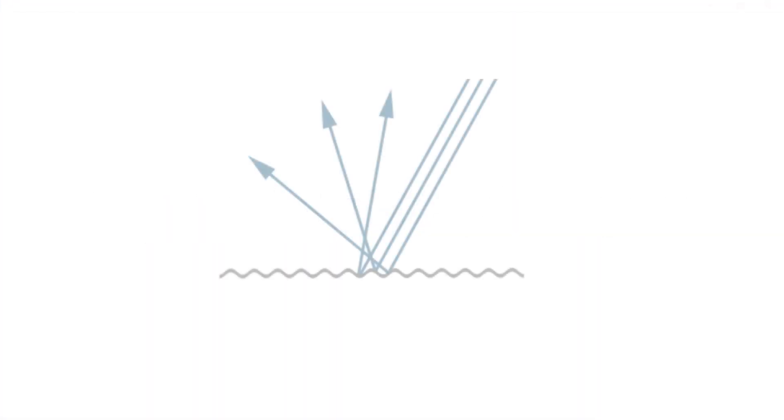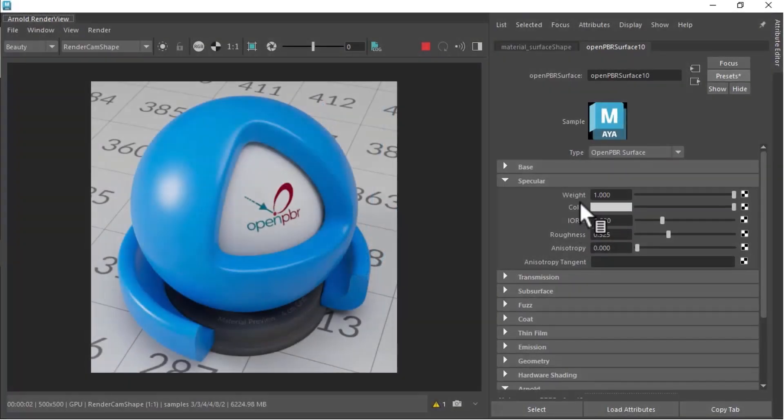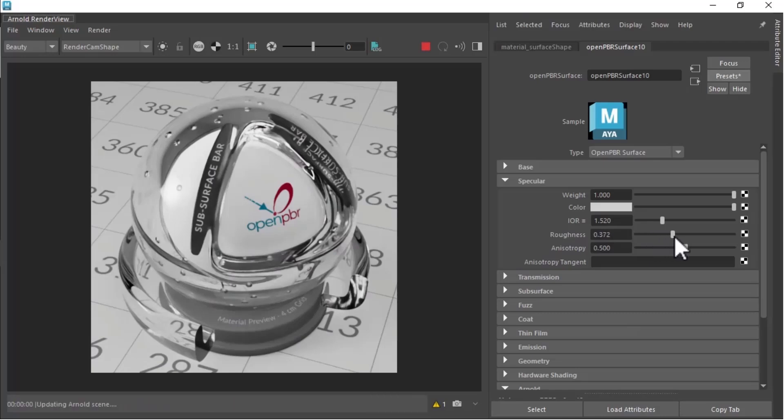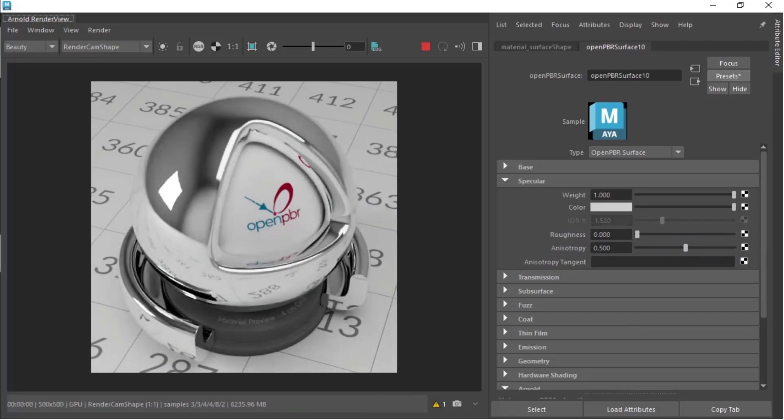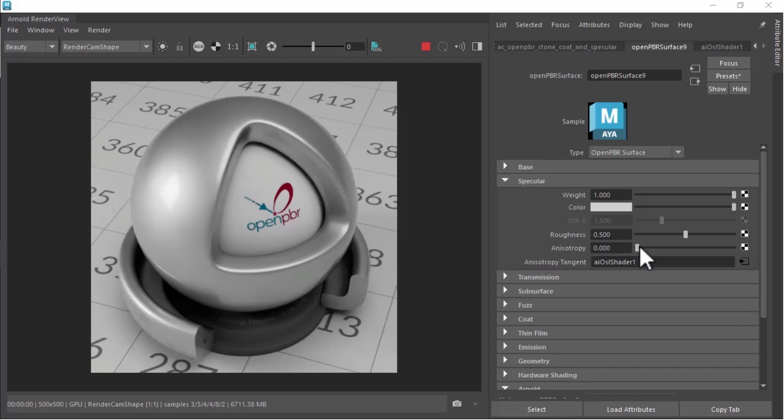In both the metal and dielectric cases, the surface appearance is strongly affected by the roughness properties. This controls the bumpiness of the surface, which makes light scatter in different directions and gives a rougher appearance. The main control for this is specular roughness, which affects the entire base. At 0, this produces a completely smooth, shiny appearance with sharp highlights. When dialed to 1, the highlights are blurred and the surface becomes matte looking. Note that energy is conserved, so the blurred highlight is also dimmer.